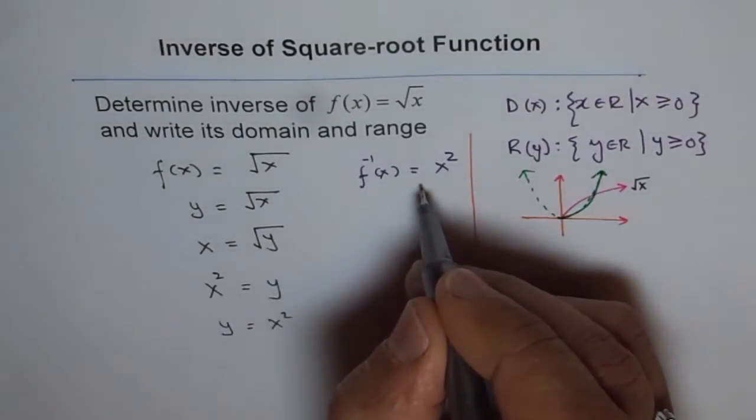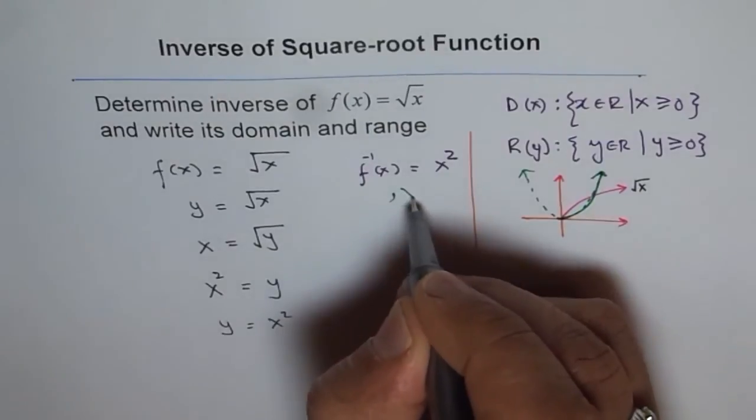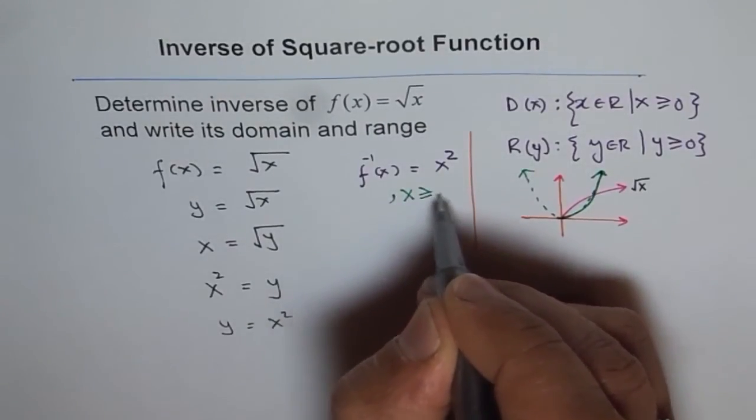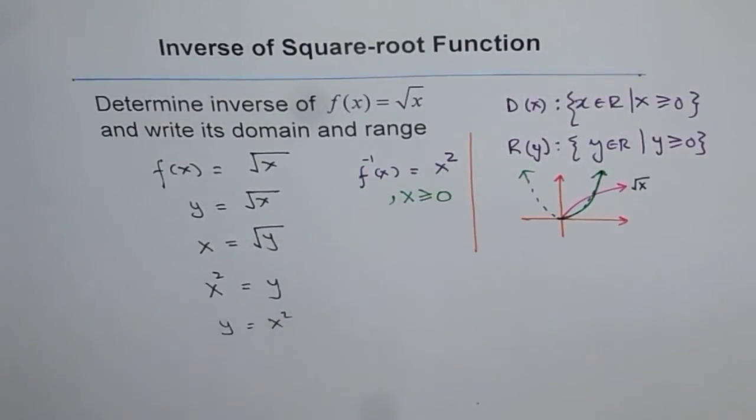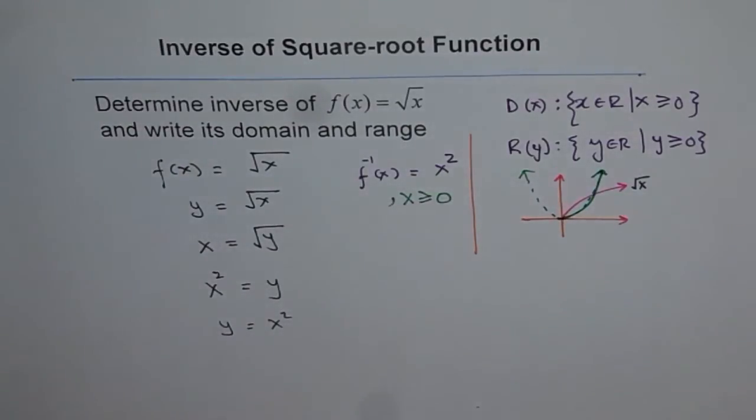So therefore, we should write here that x is greater than or equal to zero. Now it becomes inverse of square root x. Do you get the point?